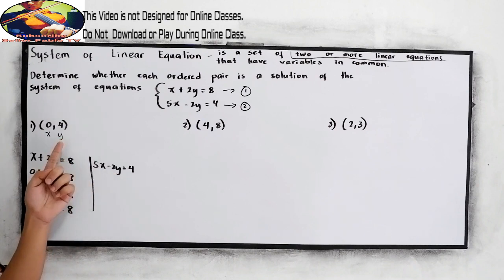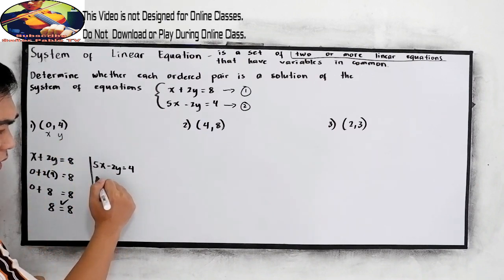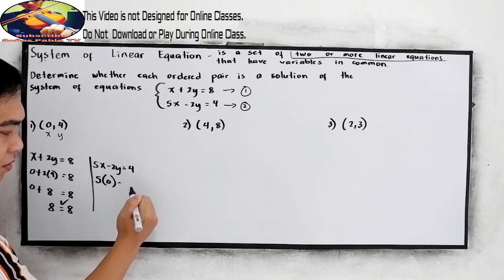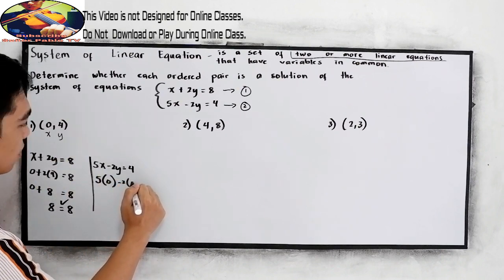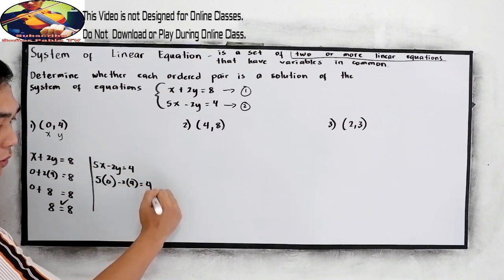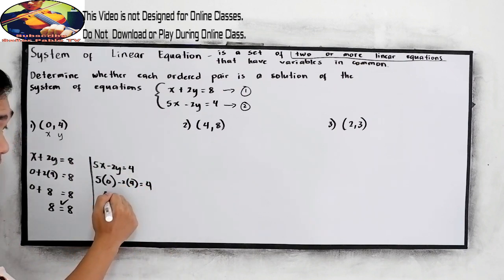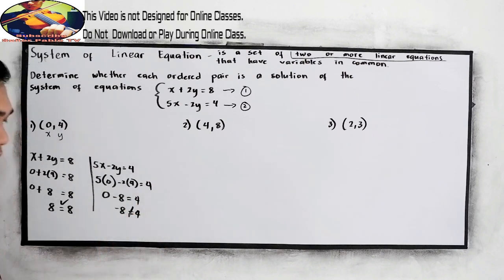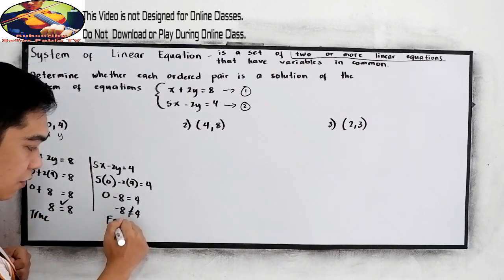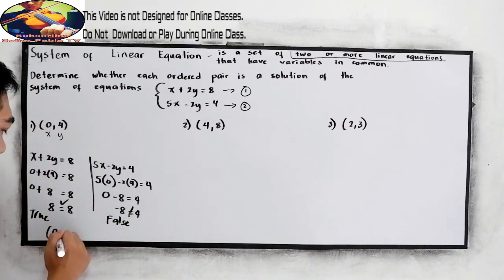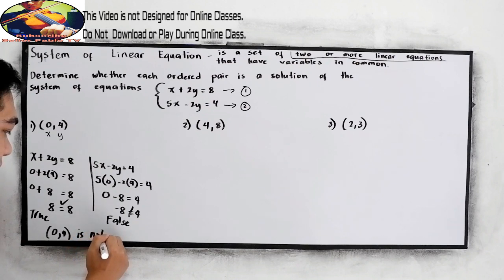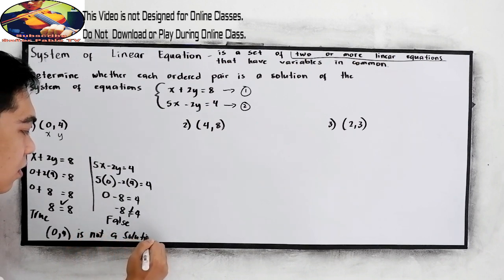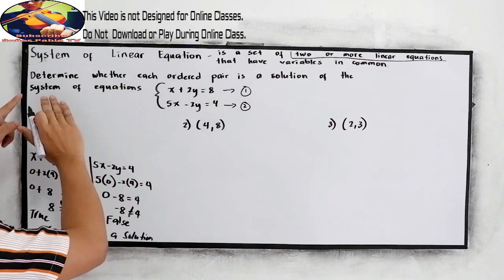Now let's check equation 2: 5 times 0 minus 2 times 4 equals 4. That gives 0 minus 8 equals 4, but negative 8 is not equal to 4. So equation 1 is true while equation 2 is false. Therefore, (0, 4) is not a solution of the system of equations.